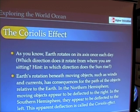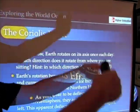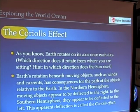As you know, Earth rotates on its axis once each day. And hopefully you know what direction does it rotate from where you are sitting. The sun rises in the east, so that means Earth is moving towards the east. Earth's rotation beneath moving objects, as I said before, has consequences for the apparent path of those objects relative to the moving Earth. In the Northern Hemisphere, moving objects appear to move or appear to be deflected to the right. In the Southern Hemisphere, they appear to be deflected to the left. And that deflection is called Coriolis effect.